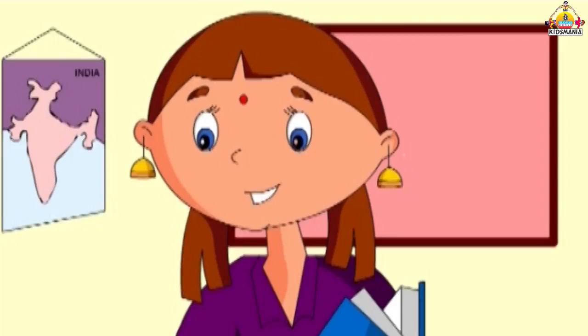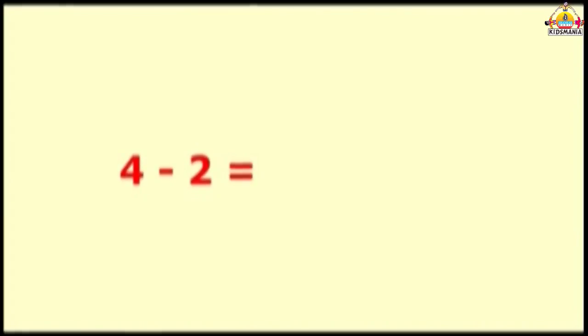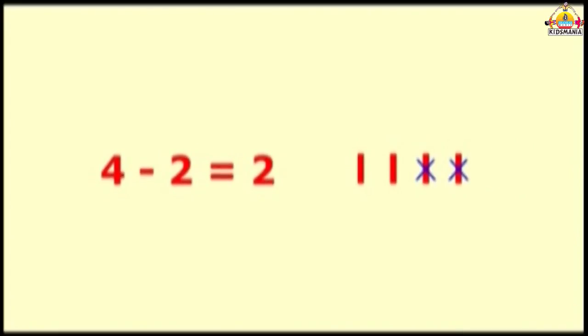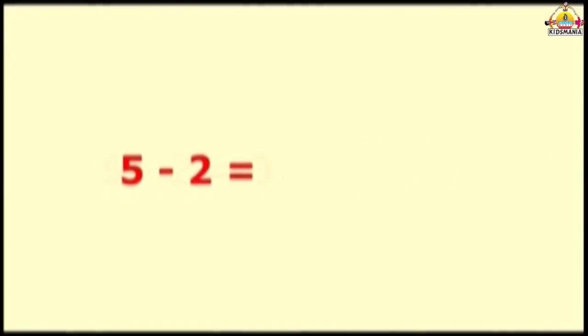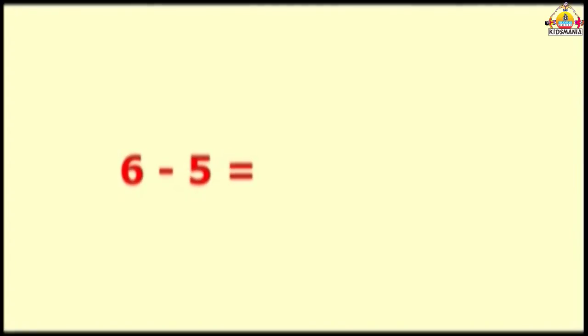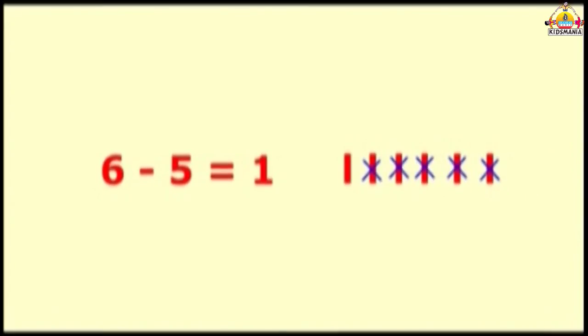Let's learn simple subtraction by row method. 4 minus 2 is 2. 3 minus 1 is equal to 2. 5 minus 2 is 3. 6 minus 5 is equal to 1.